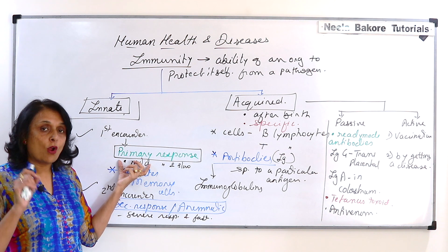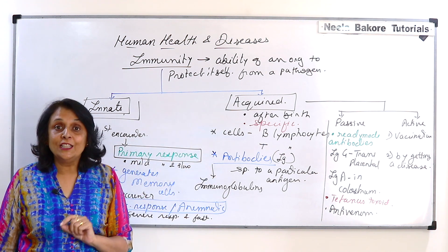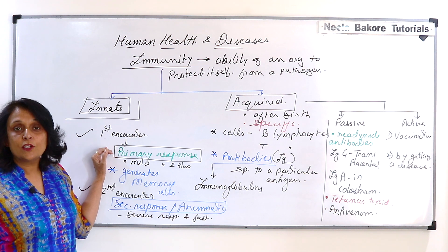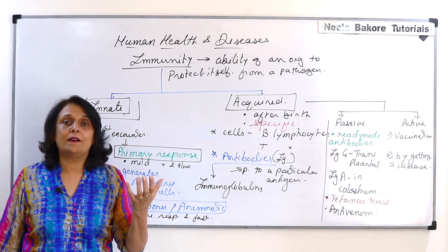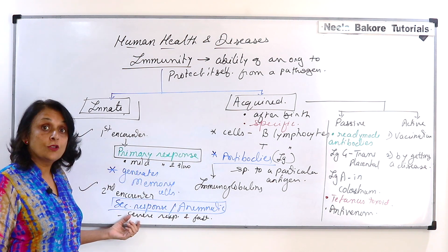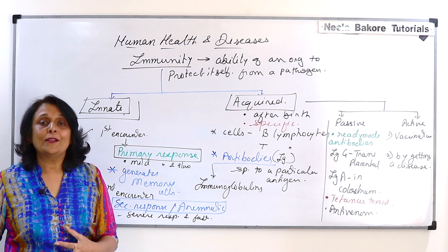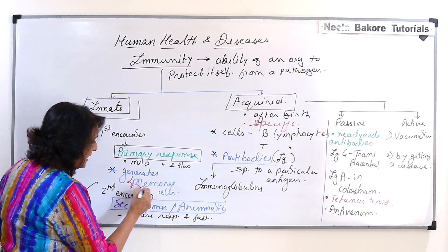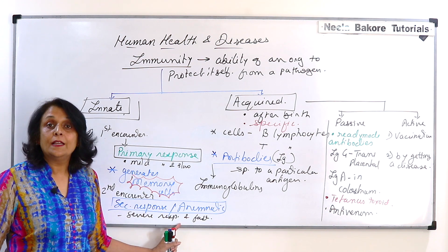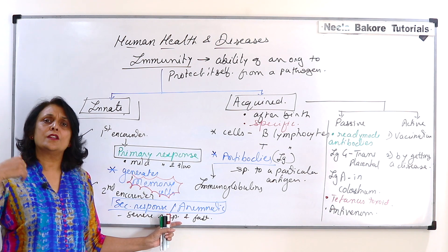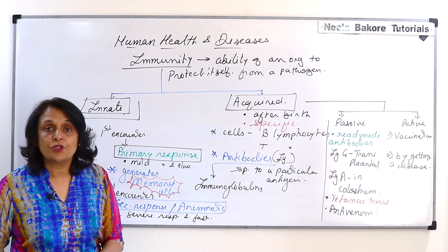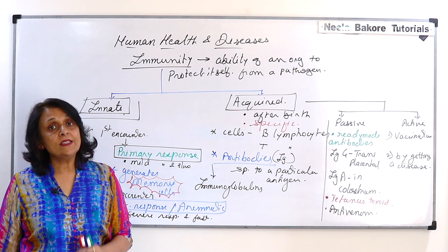So what happens normally in vaccination? We take a weak or killed pathogen, so the first encounter with that weak pathogen generates a primary response. It results in a minor reaction — there can be mild fever, mild rash — and in two, three, four days everything is okay. Now the second time, or after that, if the live pathogen enters our body, we have these memory cells ready. As soon as the live pathogen enters, the secondary response kicks in, resulting in the formation of a large number of antibodies. They destroy all those live pathogens, and that is how we remain protected.